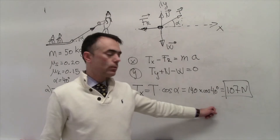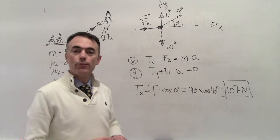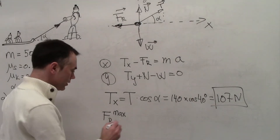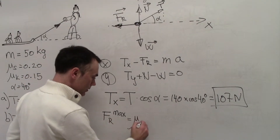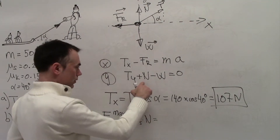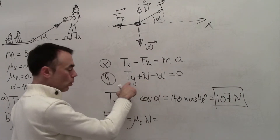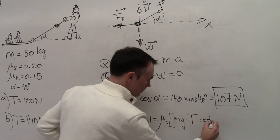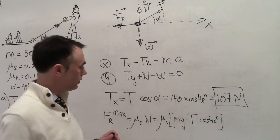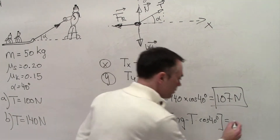Now let's check 140 newtons using the same steps. The x-component of force is 107 newtons. The maximum static friction is mu-static times N, where N equals mg minus Ty using the new tension value. Computing this gives a maximum friction of 60 newtons.